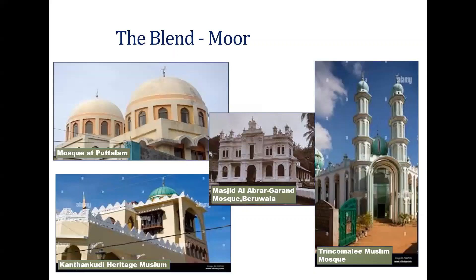Then we come to the modern era — the post-British period. There is a lot of Moorish influence in Sri Lankan architecture in many places. You can see the mosque in Puttalam — towards the Colombo-Anuradhapura road — some are in Trincomalee in the north, and Kankasanthurai is also in the north. You can see the slight difference between the architecture of the southern part and the others, because the south is influenced by Portuguese and Dutch heritage.